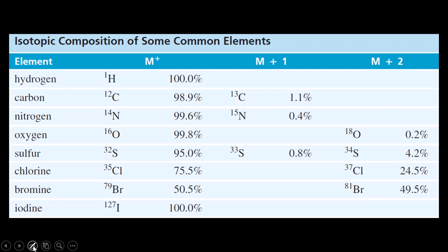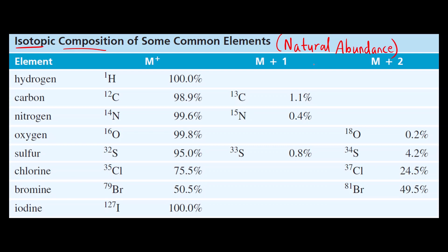For identifying the heteroatom, in the last video we had seen the isotopic ratio — how to find out the intensity ratio in mass spectrum. We had seen this table, which gives the isotopic composition, or natural abundance, of isotopes of some elements. This will help us identify the intensity ratio of some isotopes, and by looking at the intensity ratio we will identify the heteroatoms.